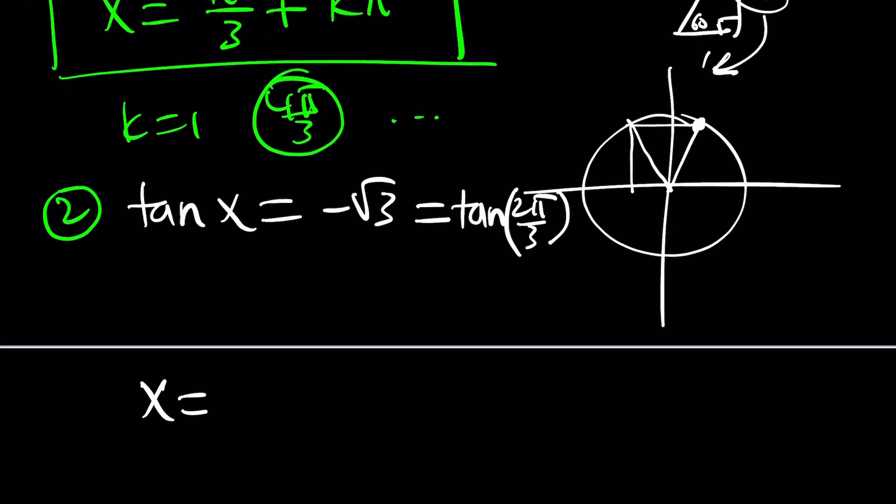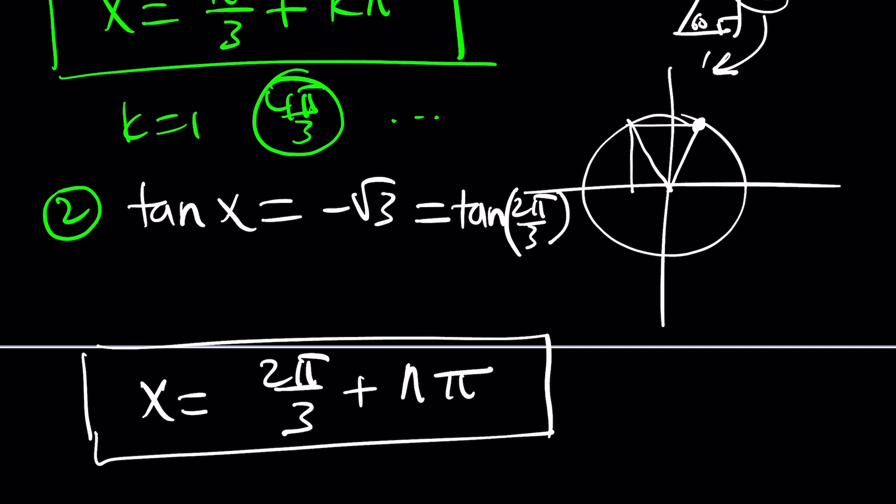So from here, we get x = 2π/3 + kπ. Or if you want to use a different integer, nπ. Did I say n and k are integers? Now I said it. And this brings us to the end of this video.